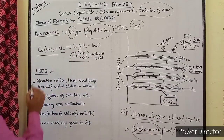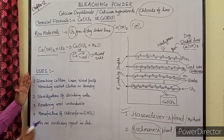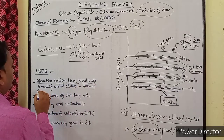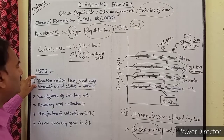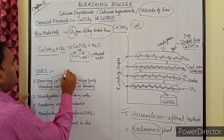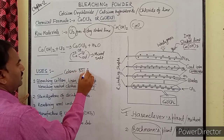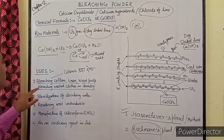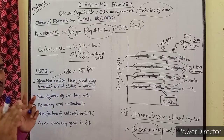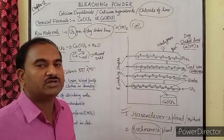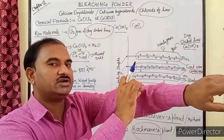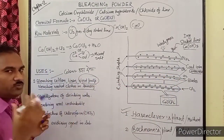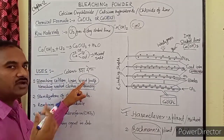Now let's see the uses of bleaching powder. Bleaching powder has a variety of uses. It is used for bleaching cotton, linen, and wood pulp, and for bleaching washed clothing in laundry. Bleaching means directly removing the color of something — making it colorless. It is especially used in the textile industry.